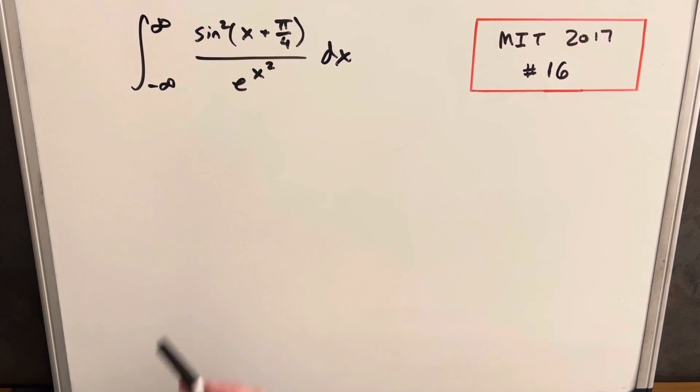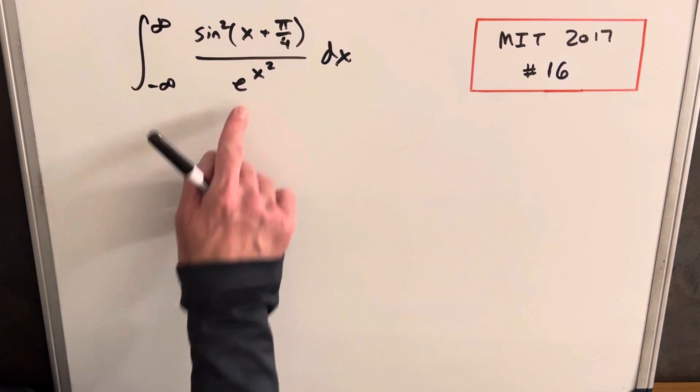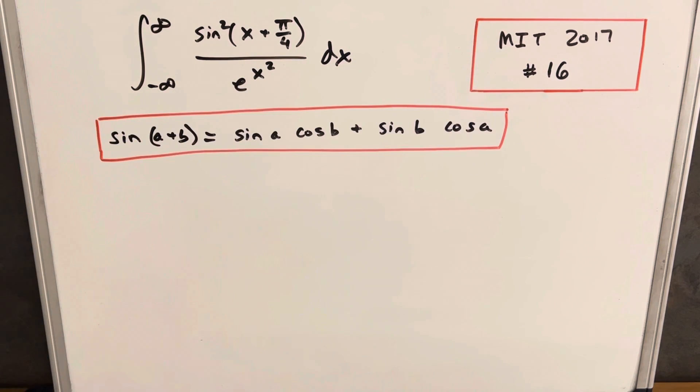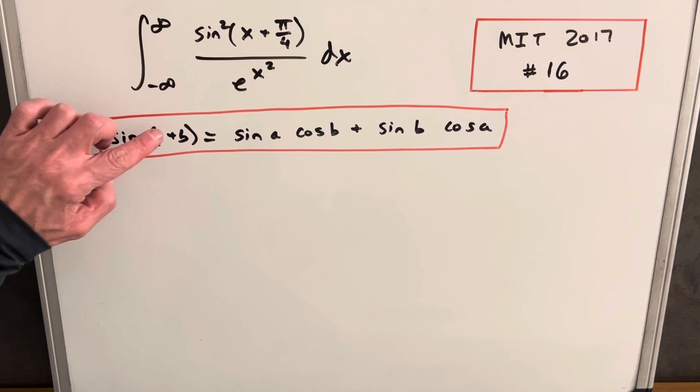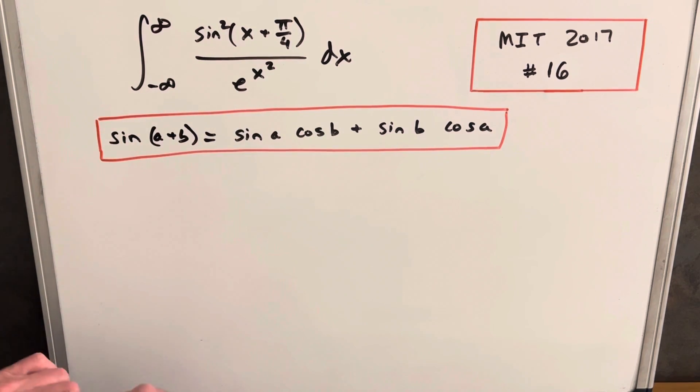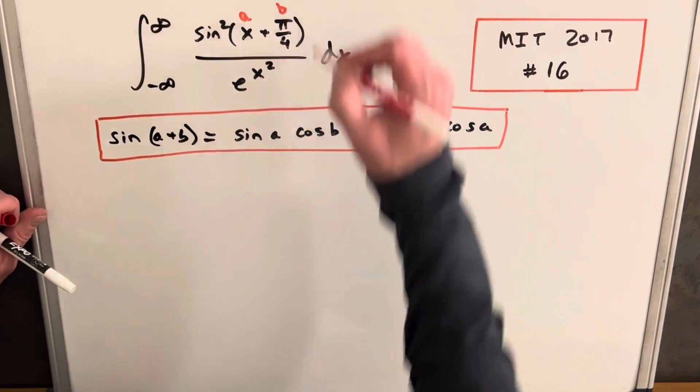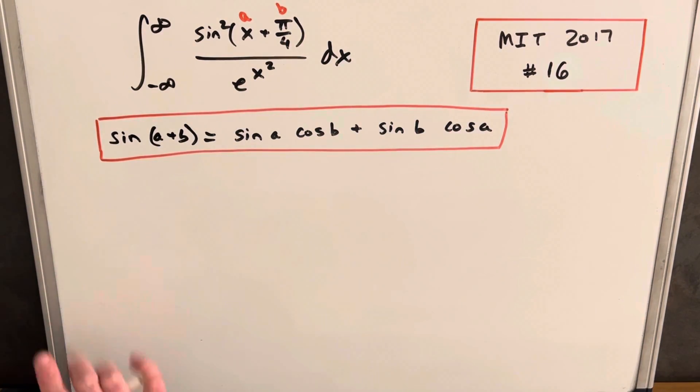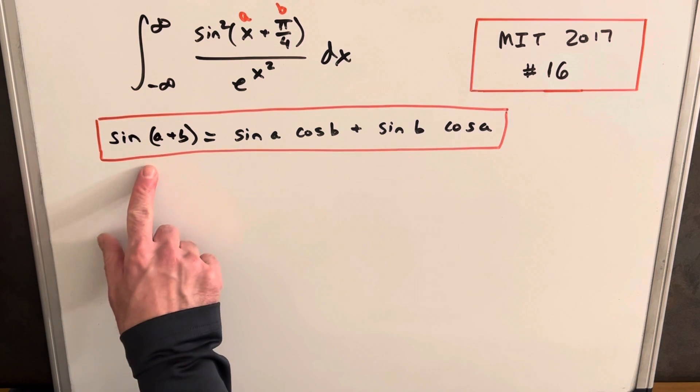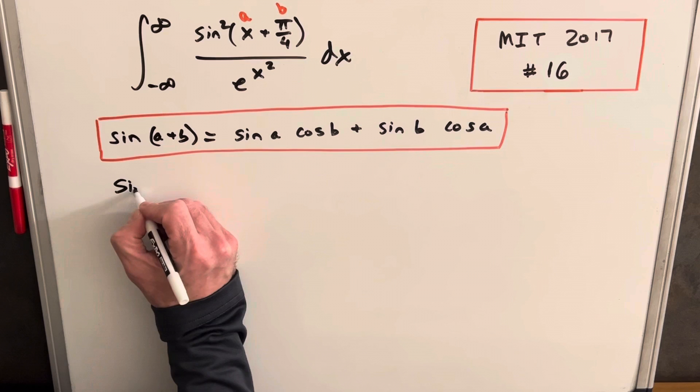So I think what I might do is deal with this and see if I can somehow simplify this and then get back to this. Now we have a useful formula for angle sum of sine that tells us sine of a plus b is sine a cos b plus sine b cos a. So what we'll do is kind of just label this as our a and this as our b and apply that formula. We're not worried about the square, we're just gonna break up the sine then we can square it afterwards.